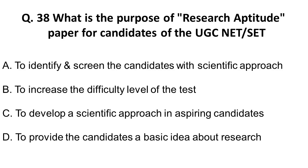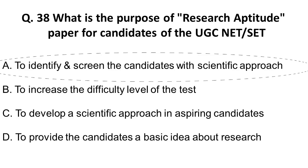Question thirty-eight: What is the purpose of the research aptitude paper for UGC NET candidates? Any screening agency will identify candidates based on criteria required for the profession. The correct answer is to identify and screen candidates with a scientific approach.